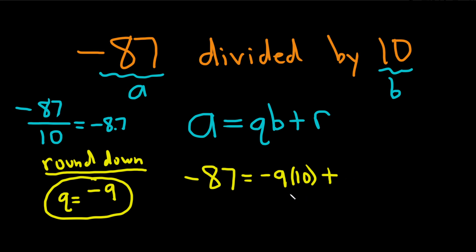To figure out what this is, I like to multiply this out. Negative 9 times 10 is negative 90. So now you ask the question: what do you add to negative 90 to get negative 87? Well, 3. And that's going to be our remainder, which is 3.